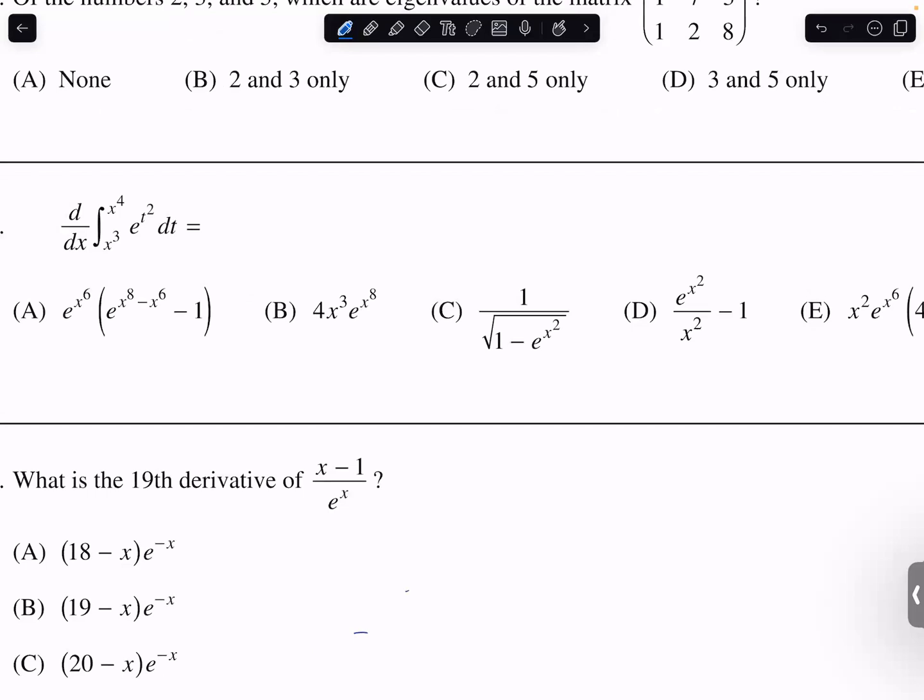Then we have to find the derivative of the limit of integration. The first term is e to the t squared evaluated at x to the 4, which is e to the x to the 8, times the derivative of x to the 4, which is 4x to the 3rd, minus e to the t squared evaluated at x to the 3rd times 3x squared.